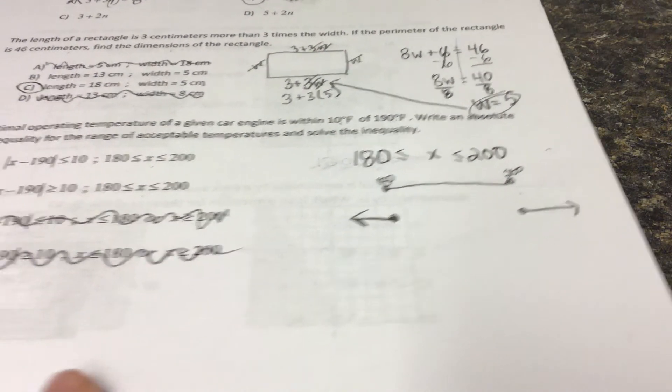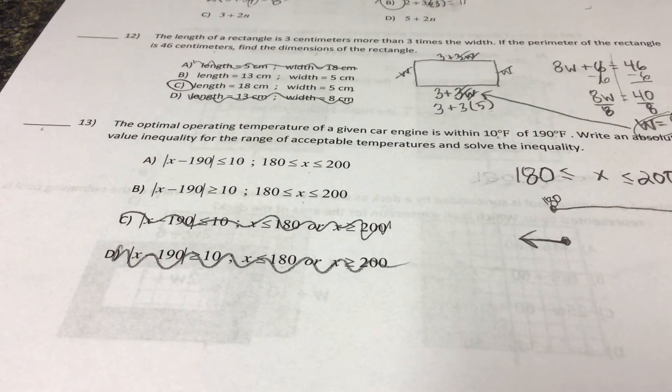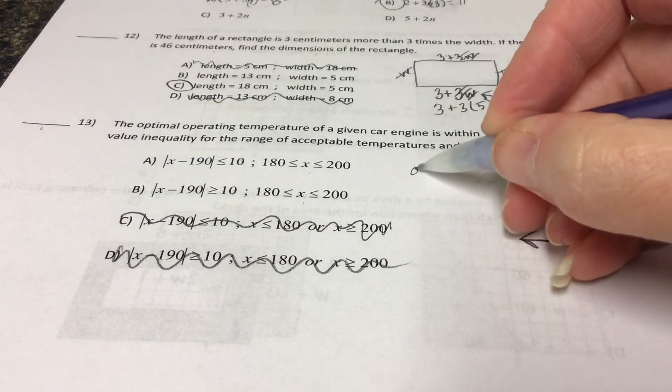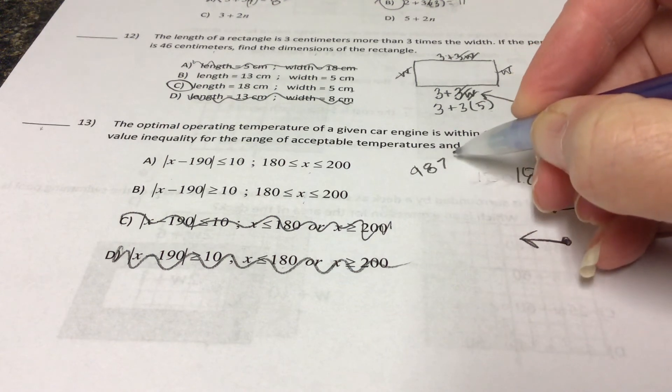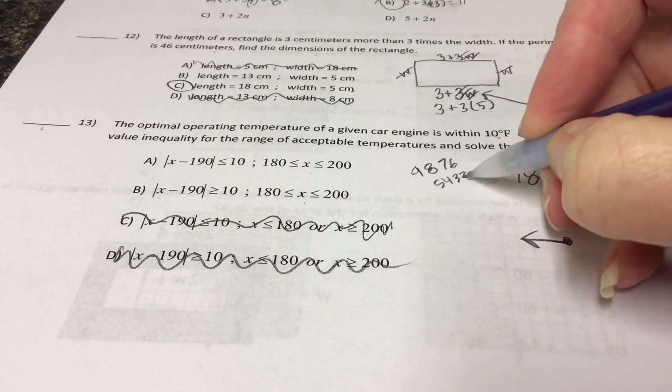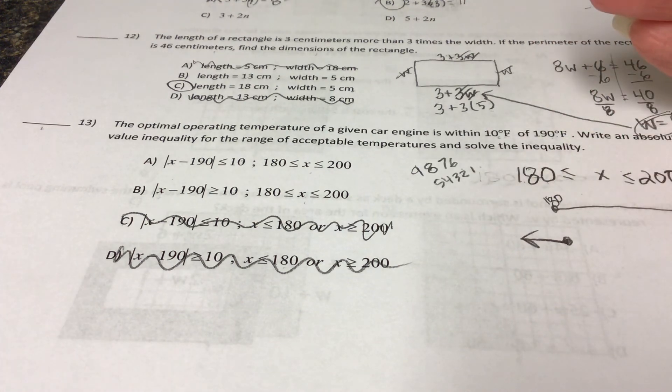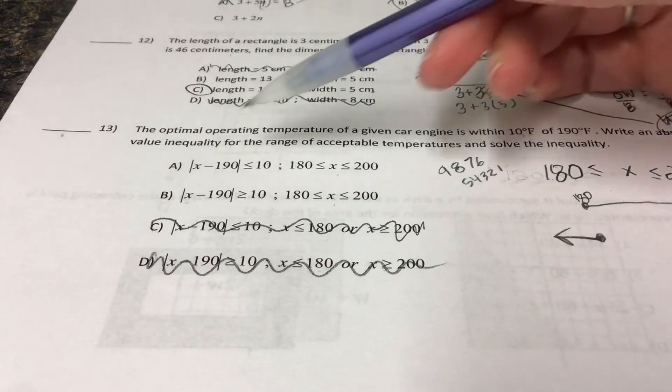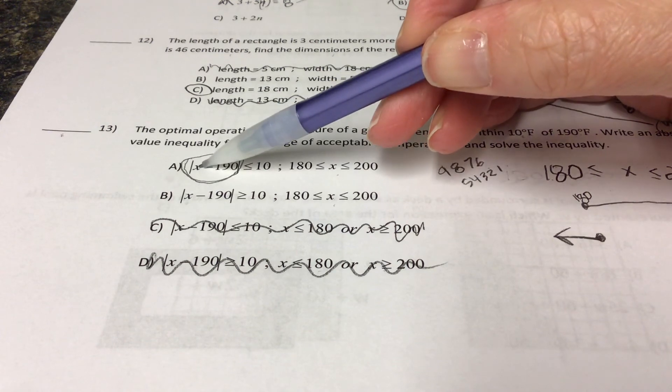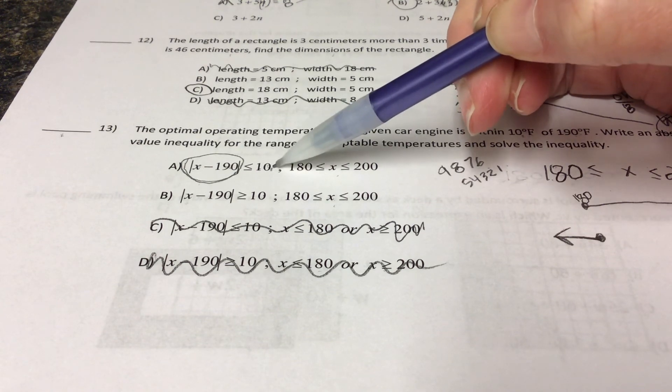So here's where we get into the other part of that. It says within ten degrees. So we can be nine degrees difference, we can be eight degrees difference, we can be seven degrees difference, we can be six degree difference. We can be five, four, three, two, or one degree difference. We can be anywhere ten or less, right? So right here, if you look at this, if we subtract the actual temperature minus one ninety, we can be anything less than or equal to ten degrees.